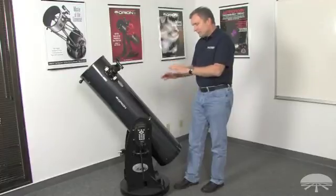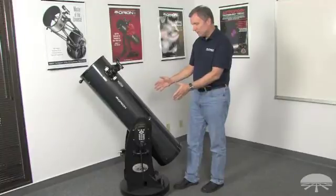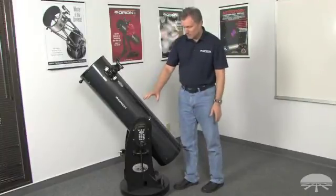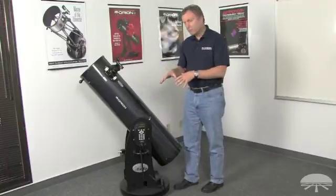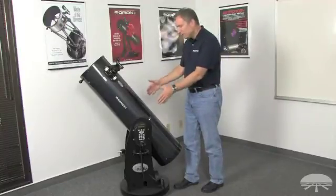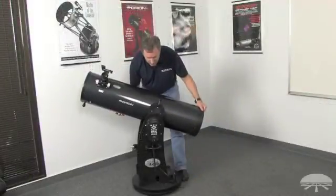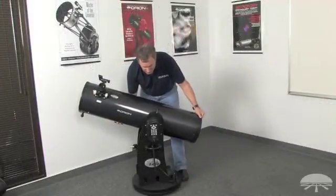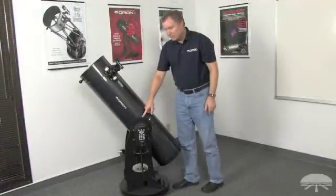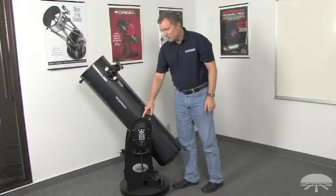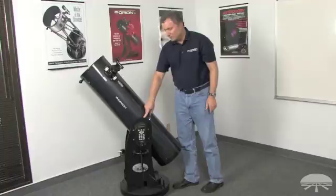After the initial assembly, and there's a little bit of assembly involved in the base, although the motors and the encoders and the gears come preassembled from the factory. But after initial assembly, then in everyday use, you would just take the optical tube, place it on the mount, and there's a dovetail side bearing on the tube that slides right into the mating piece on the base, the altitude trunnion.